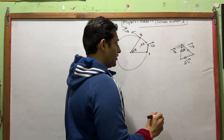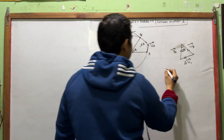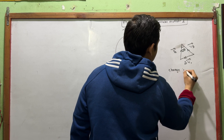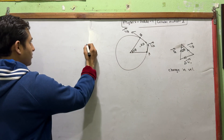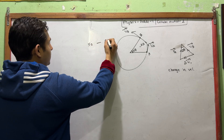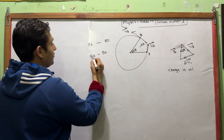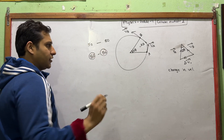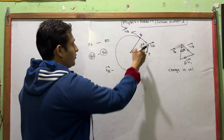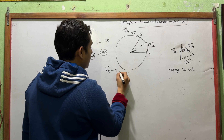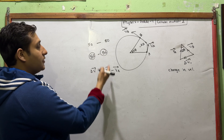Now, what is del-V? What is the change in velocity? The change in velocity del-V is V-B minus V-A. So del-V equals V-B minus V-A.